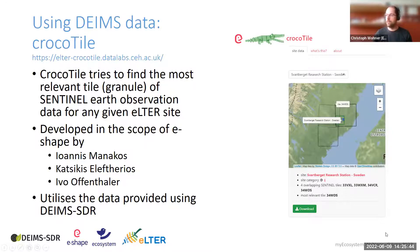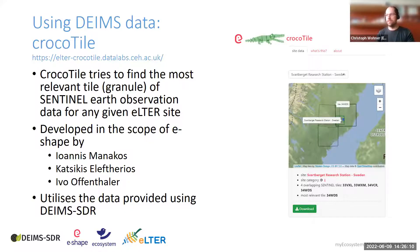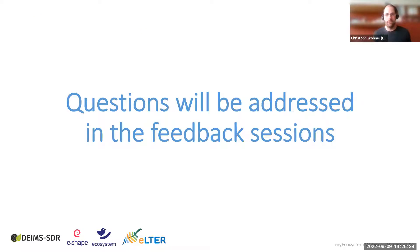As an example of what's possible when using DEIMS data, colleagues developed the CROCODILE service in the E-SHAPE project. This service takes information from DEIMS and returns the most relevant Sentinel tile for Earth observation data — so if you have an eLTER site somewhere, the service automatically tells you the relevant tiles for data extraction. It was developed in the scope of E-SHAPE and utilizes DEIMS data for its work. Questions will be addressed at the end of the webinar.